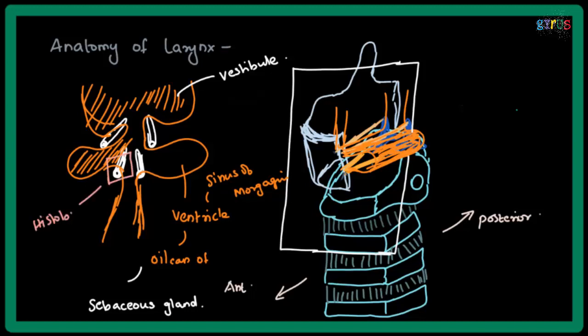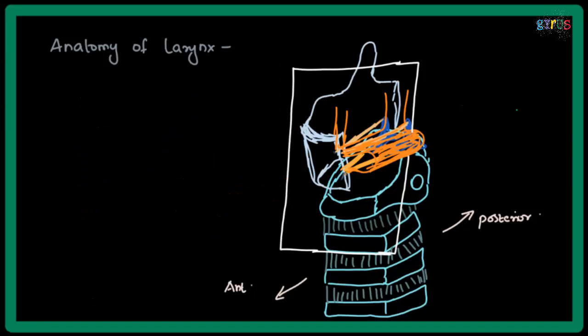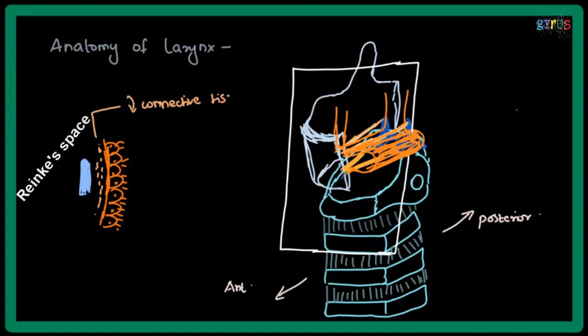If you take a histological cross section here, this is the ligament and this is the mucus layer. It's lined by ciliated columnar epithelium. There is a reduced number of connective tissue present below this.